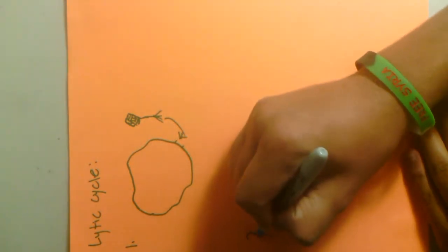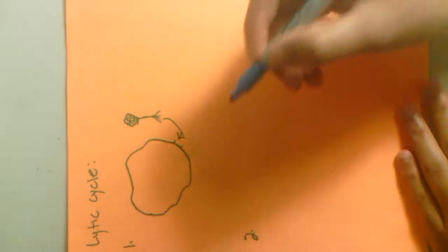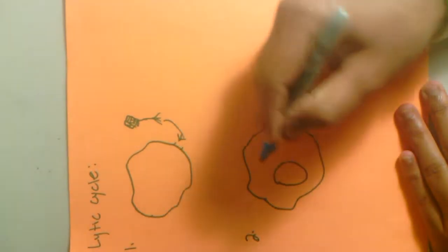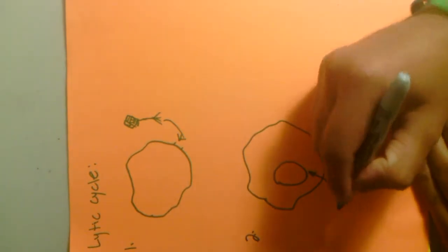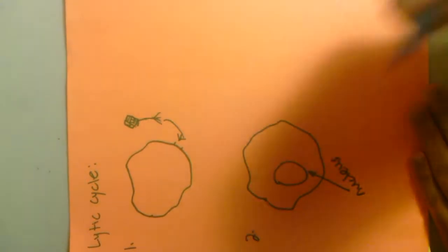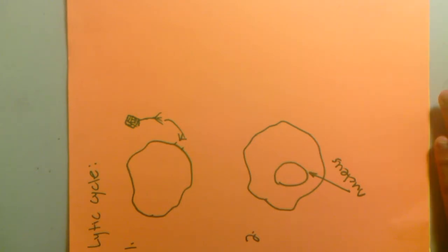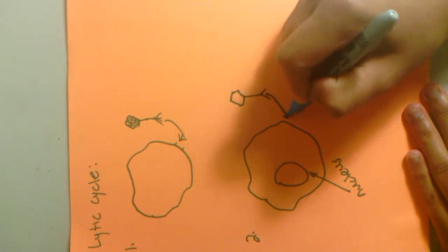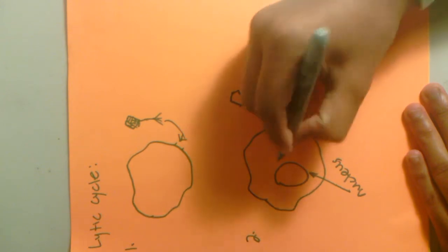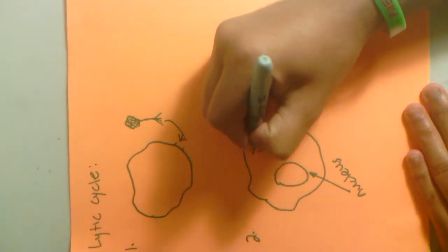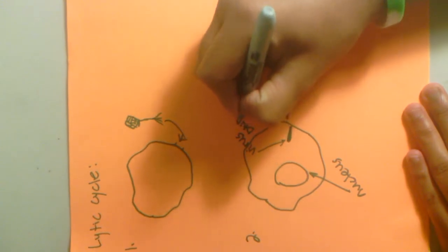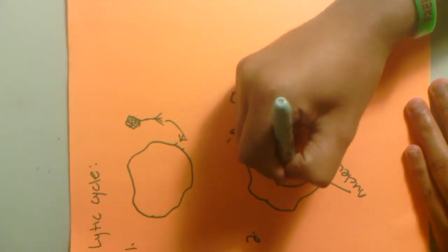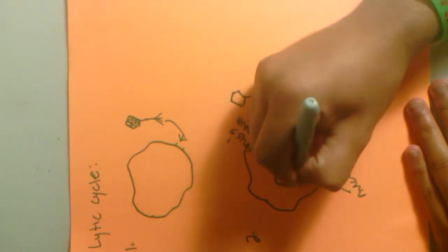And so rather it binds to this specific receptor site and it obviously binds on the surface of the host cell. And now we move on to step two of the lytic cycle where the virus - let's draw this little host cell again. And we'll draw its nucleus right here. Basically, what happens is this virus, as it comes over here, it injects its DNA. This is the virus DNA right here. And this DNA shoots right into the nucleus along with the DNA of the host cell.